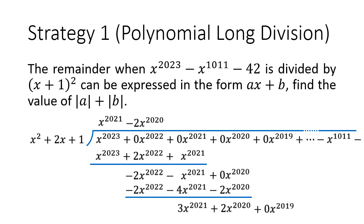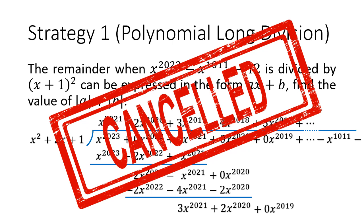So, in theory, this can be done. You can start to observe a pattern in the quotient. You can see that the coefficients are the natural numbers but with alternating signs. But you have to be super careful at the x to the power of 1011th term. So, this problem is theoretically possible to long division out, but it is a horrible strategy. So, what else do you think we can try?